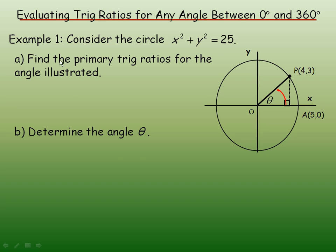This lesson will show how to evaluate trig ratios for any angle between 0 and 360 degrees. In this first example, we're going to consider the circle x squared plus y squared equals 25.